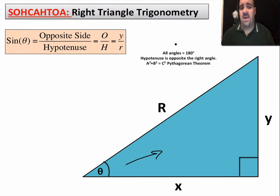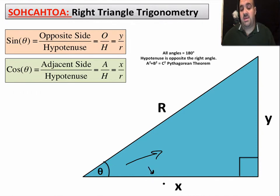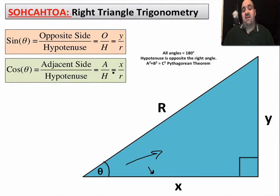Cosine — the same idea. Cosine equals the adjacent side over the hypotenuse. The adjacent side to theta is x, and the hypotenuse is always going to be r. So the cosine of theta equals x divided by r.